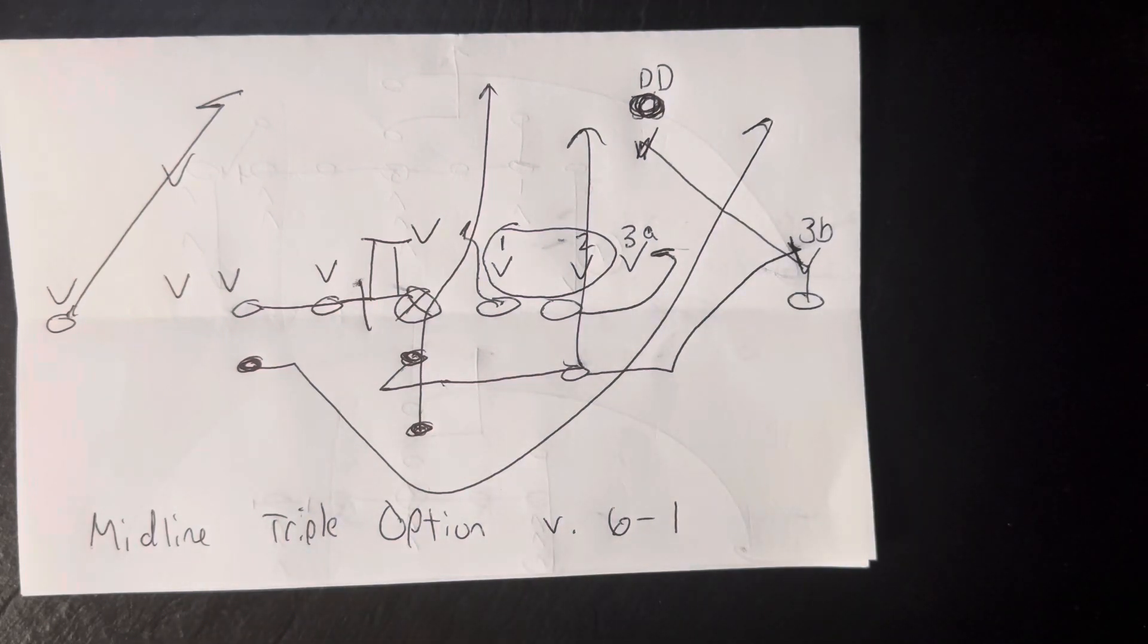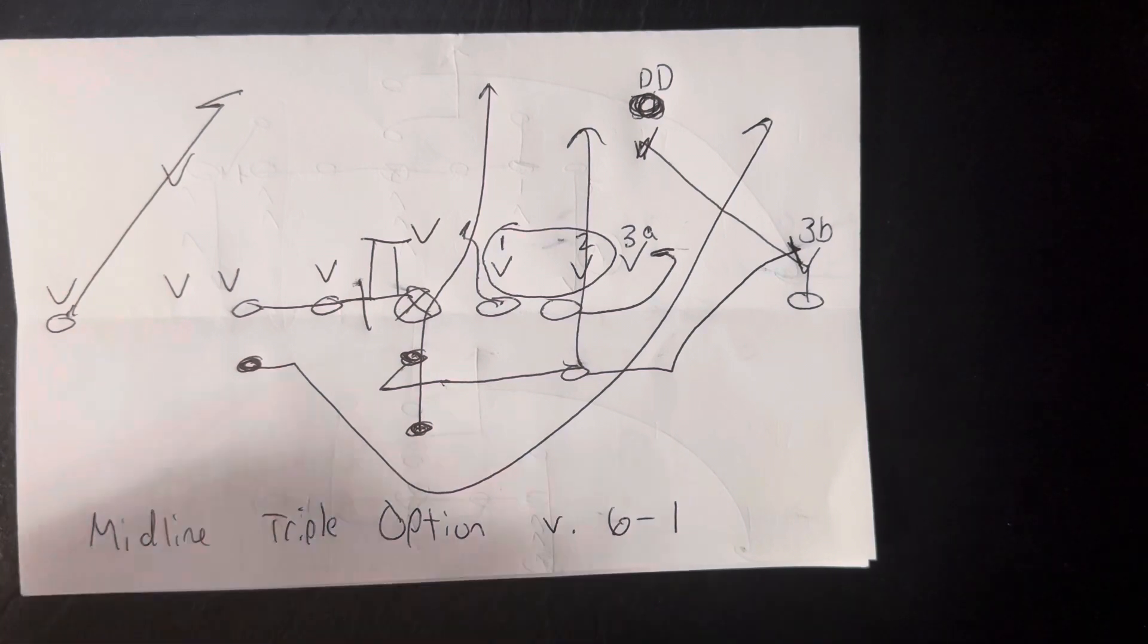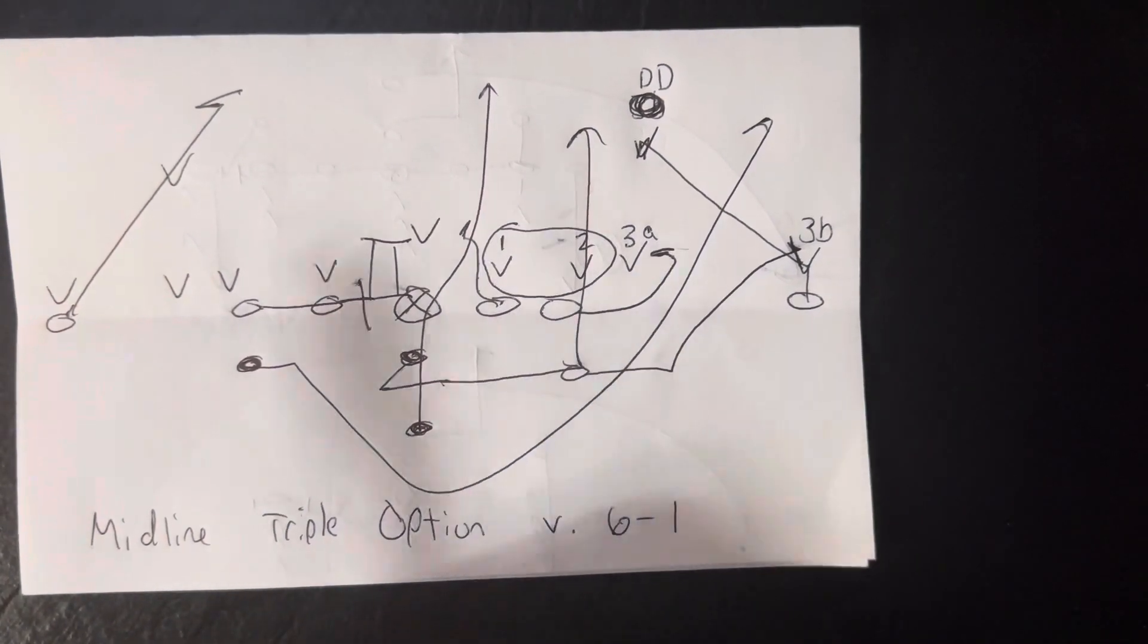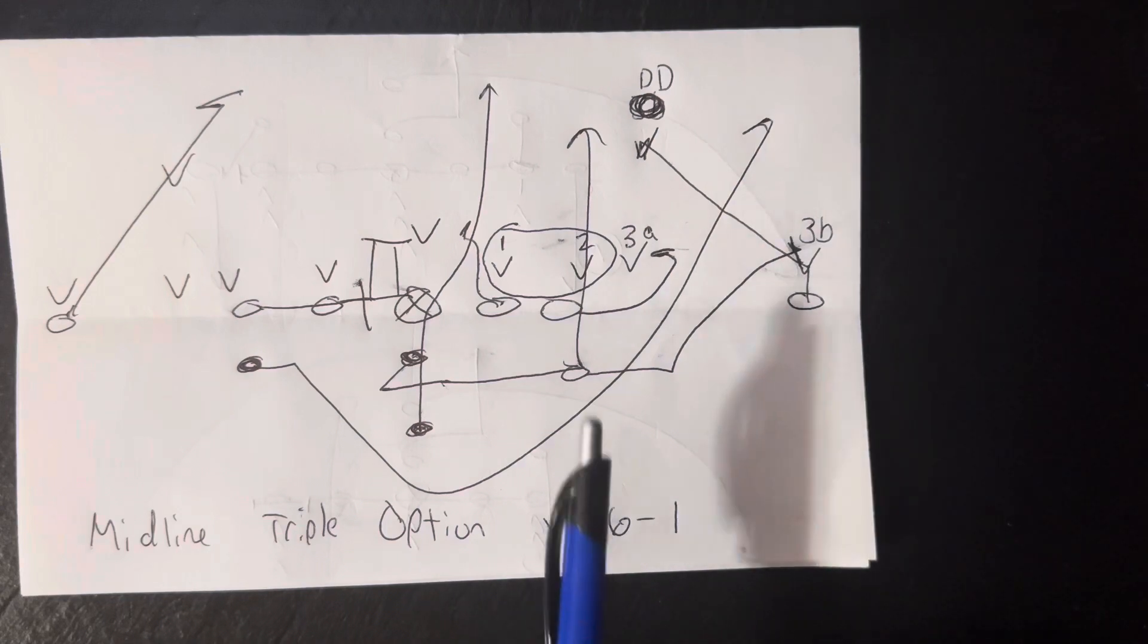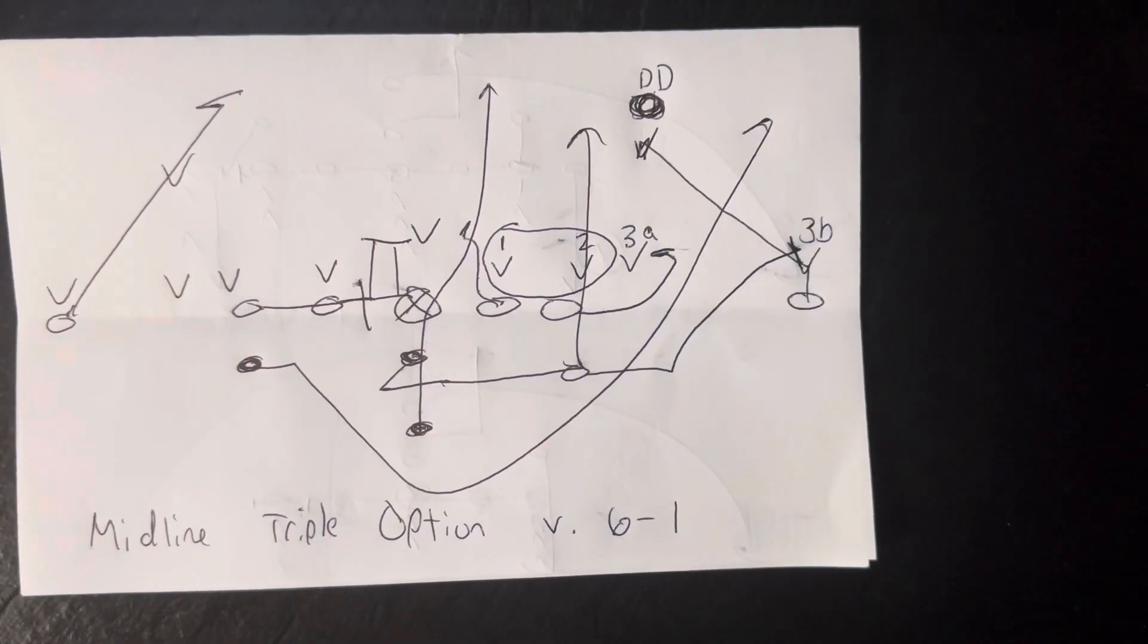That's how you run mid-triple versus a 6-1 defense. You got double run support here. So the A-back has to make a tackle, tackle, tackle call to tell the tackle that he's blocking the initial run support.